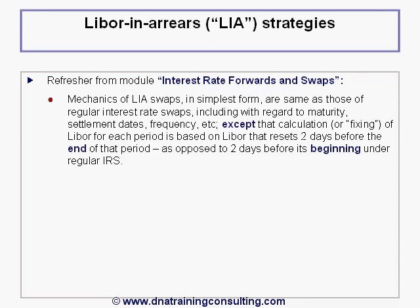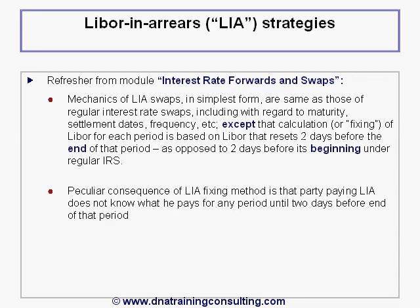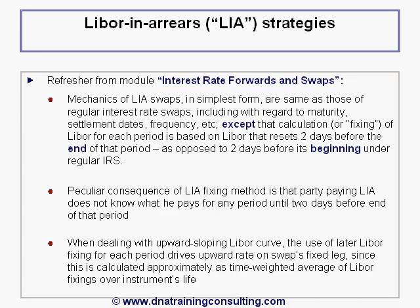A peculiar consequence of the LIBOR fixing method is that the party paying LIBOR does not know what he pays for any period until two days before the end of that period. When dealing with an upward sloping LIBOR spot-and-forward curve, the use of the later LIBOR fixing for each period will drive upward the rate on the swap's fixed leg, since this will be calculated approximately as the time-weighted average of the LIBOR fixings over the life of the instrument.